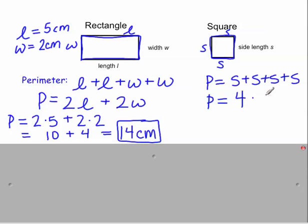4 times the side length. So say for example that we were given the side length is 4 inches. Your perimeter for this square would be 4 times 4, which is 16 inches.